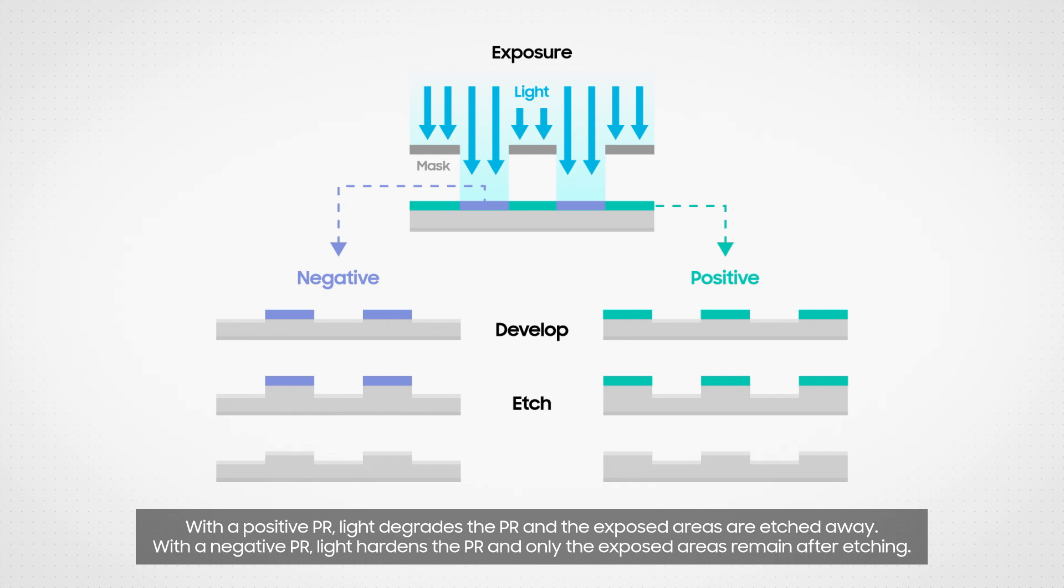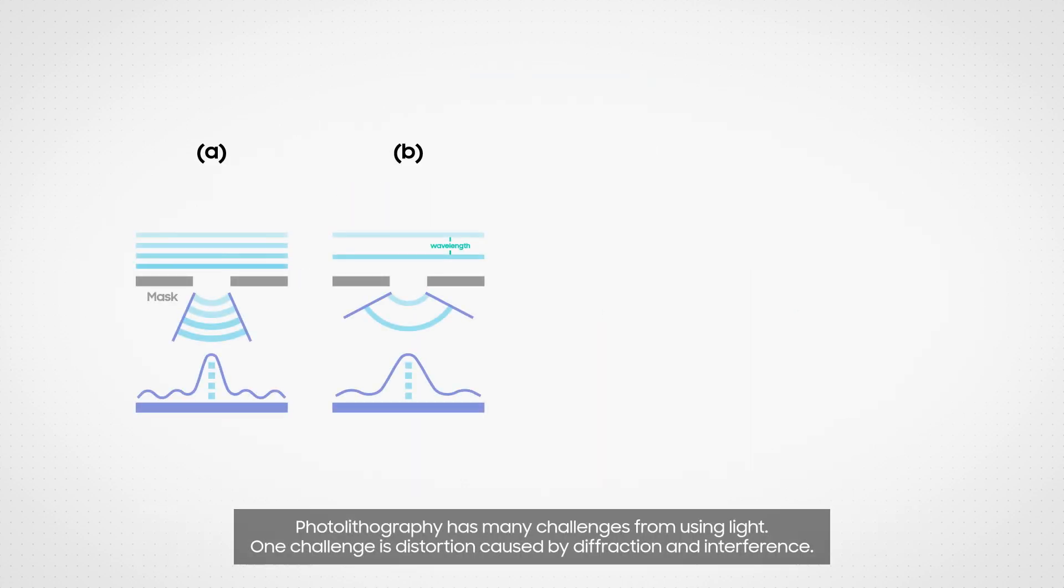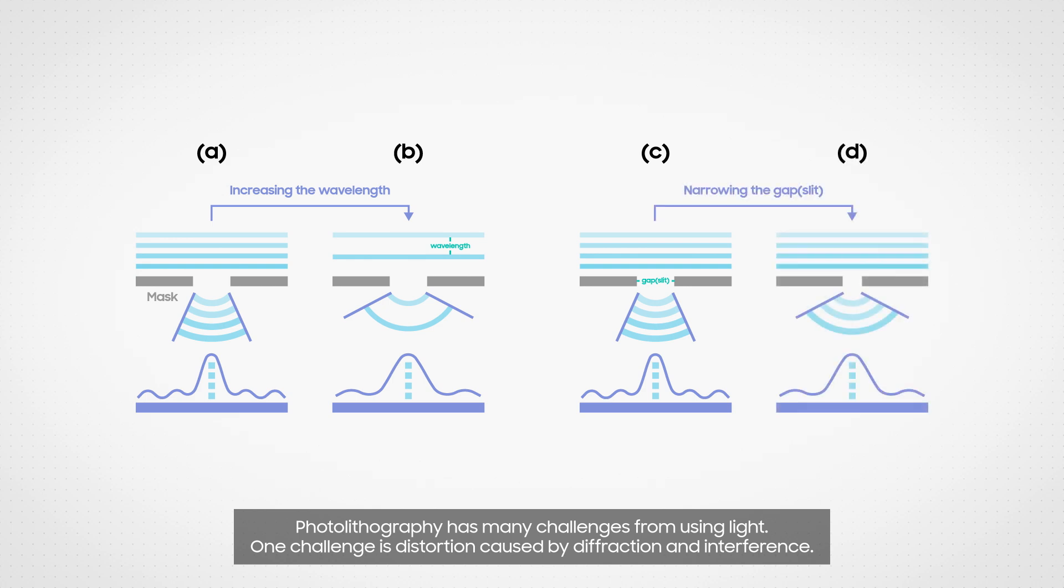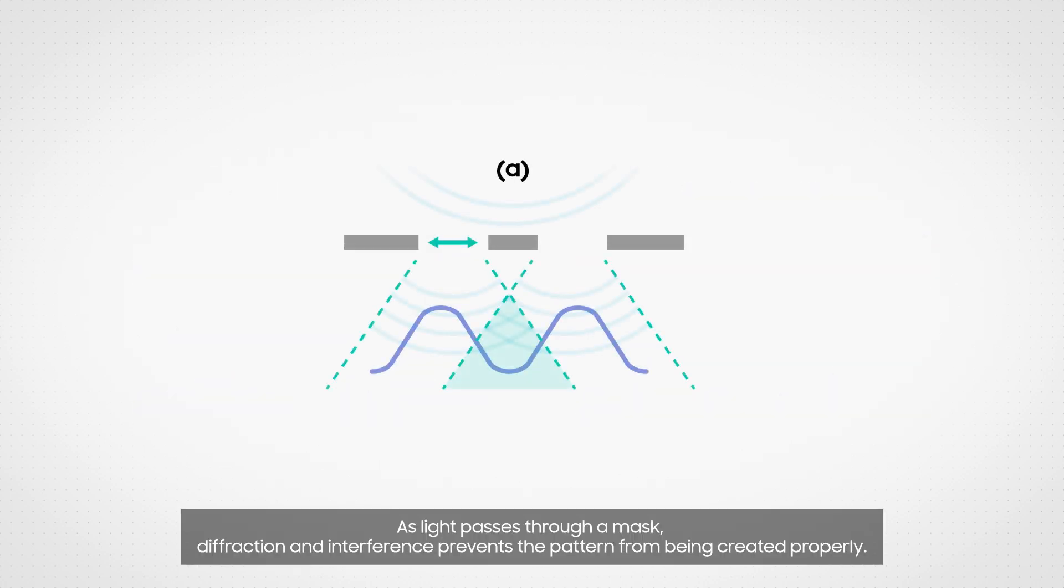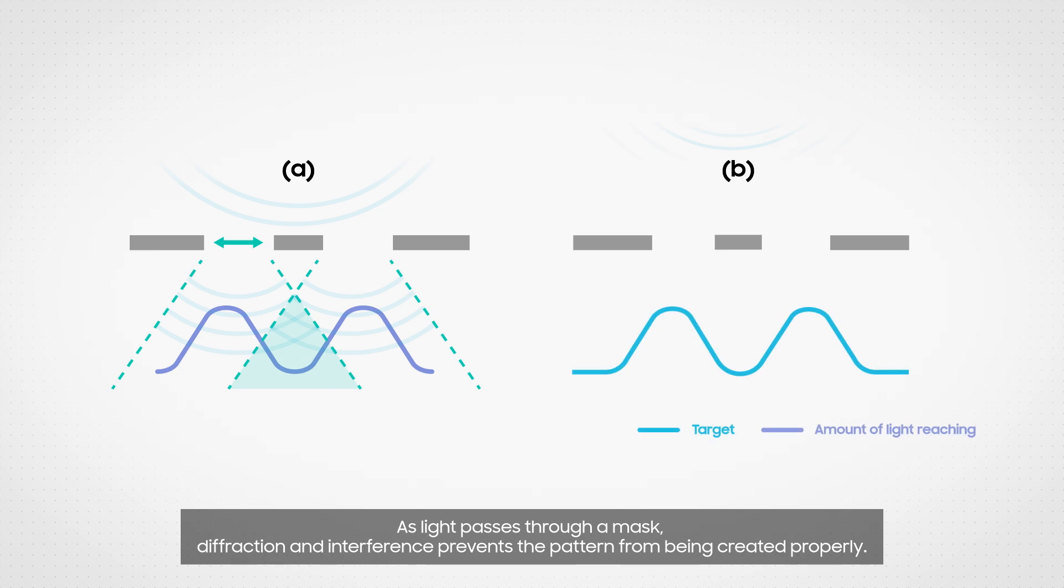Photolithography has many challenges from using light. One challenge is distortion caused by diffraction and interference. As light passes through a mask, diffraction and interference prevents the pattern from being created properly.